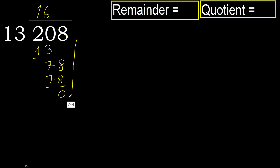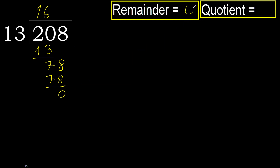There is no number, therefore finish it. 208 divided by 13 is 16.